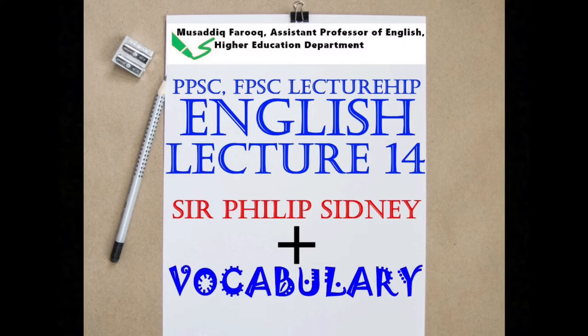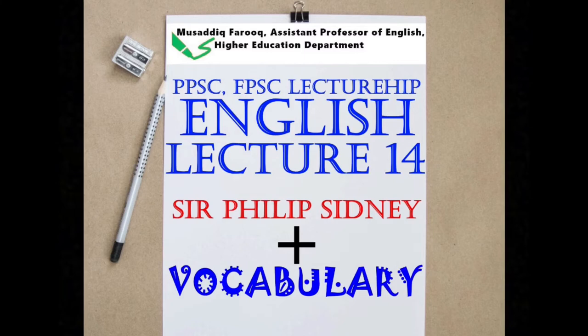Sir Philip Sidney was a social, political, courtly, military and literary figure in the history of English literature. He has a very prominent status and it is extremely unfair to ignore him. Some of his prominent works are Arcadia, Apology for Poesy, and Astrophil and Stella, a collection of sonnets and some lyrics. Please subscribe to my channel and hit the bell icon so you do not miss future lectures.